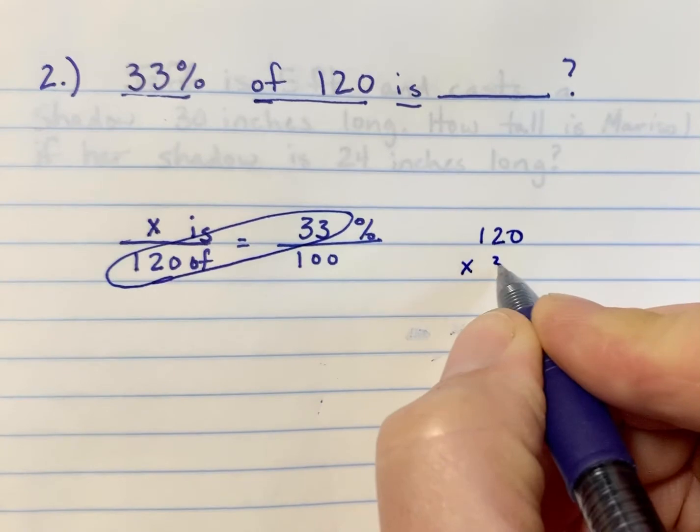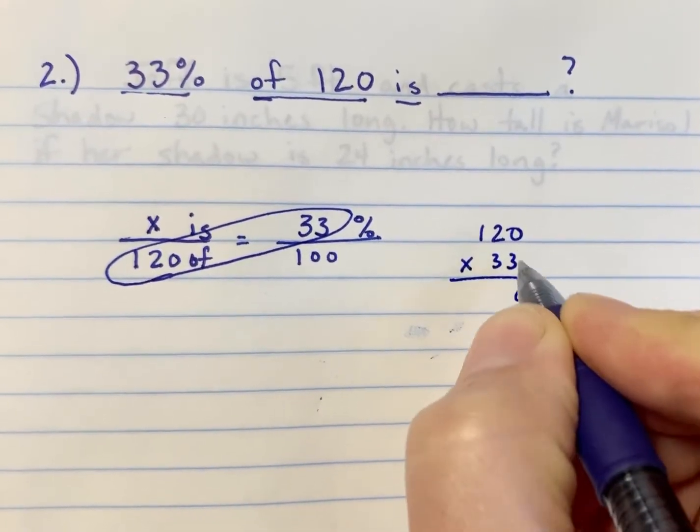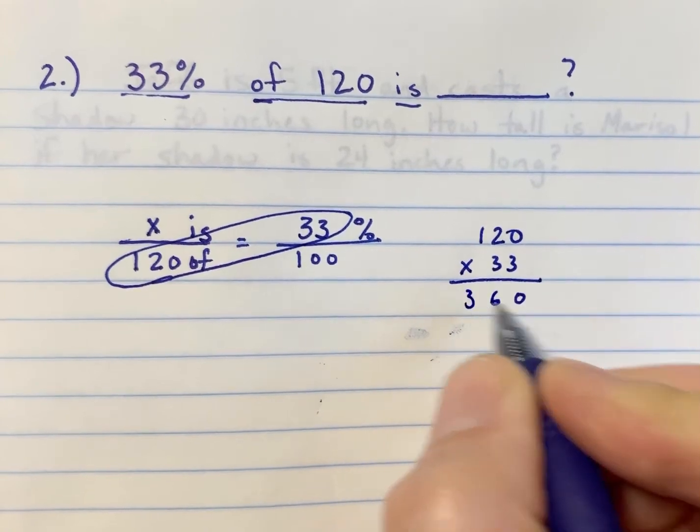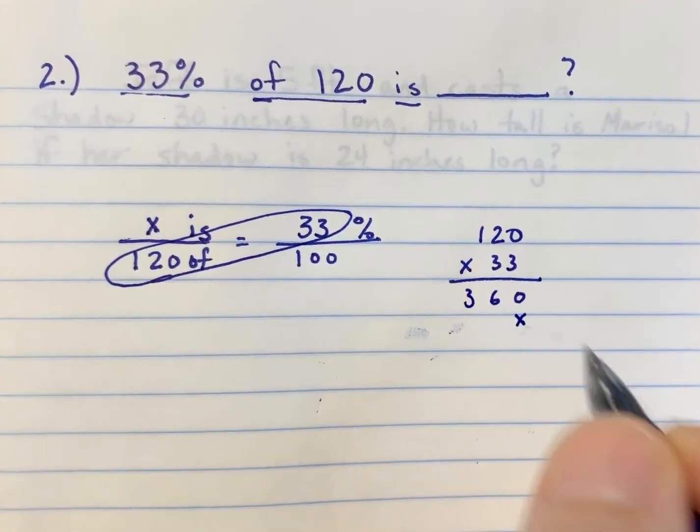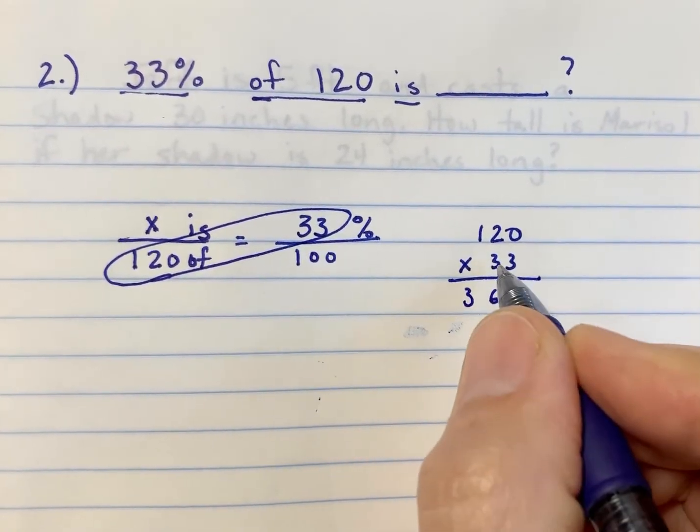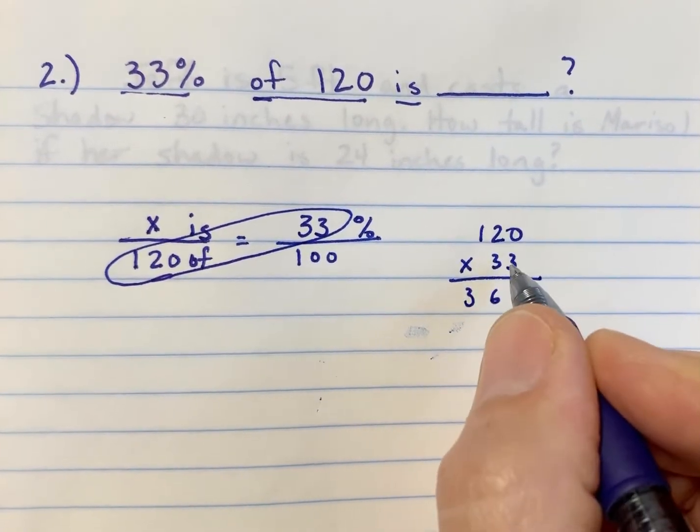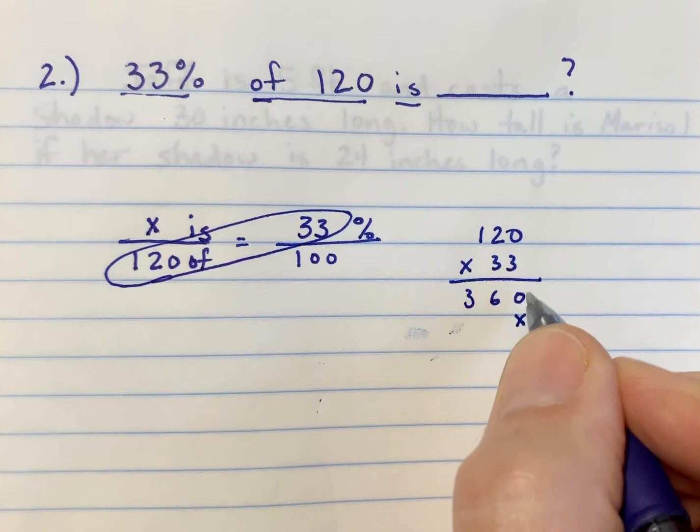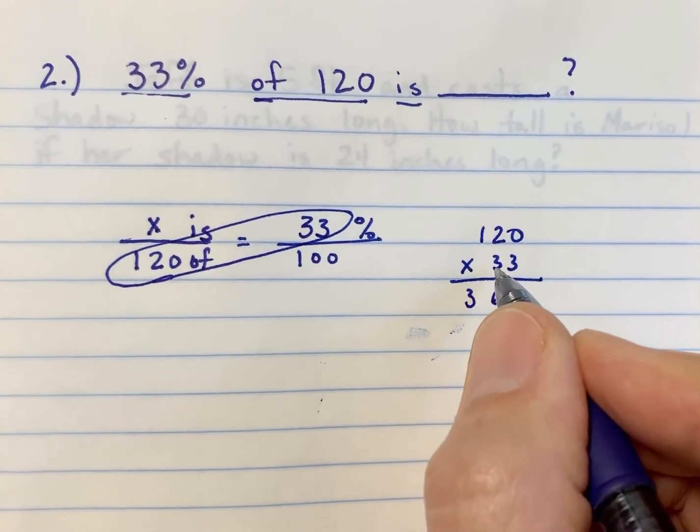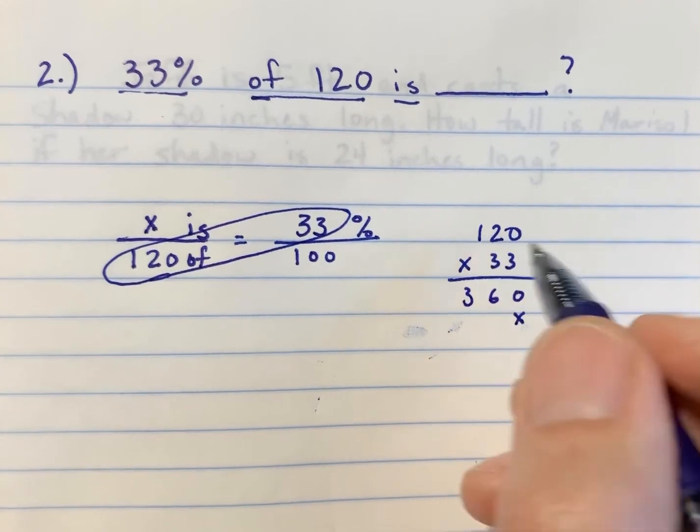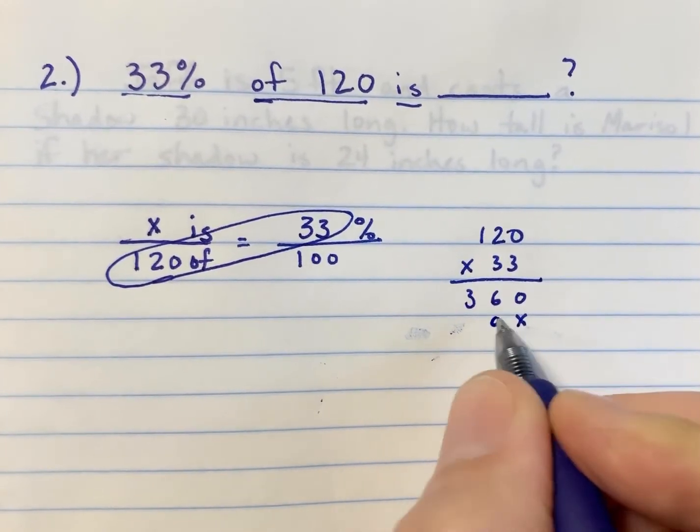120 times 33. 3 times 0 is 0. 3 times 2 is 6. 3 times 1 is 3. Placeholder, because we move over to the next digit. And if you notice, we're timesing it by the same exact number as we did in the first row. So, if I times the first row by 3, and I got 0, 6, 3, when I times the second number, which is a 3, by the same exact numbers, I'm going to expect the same exact result.